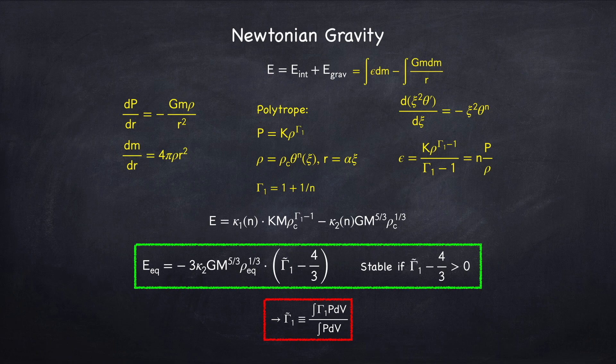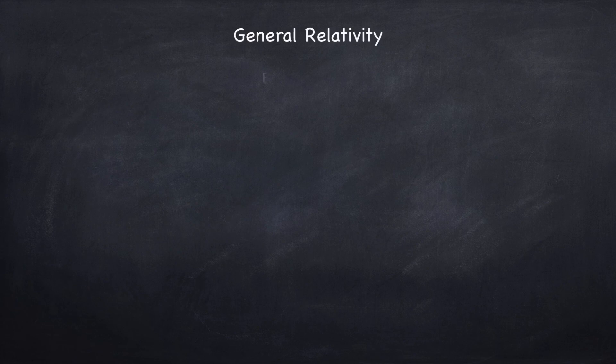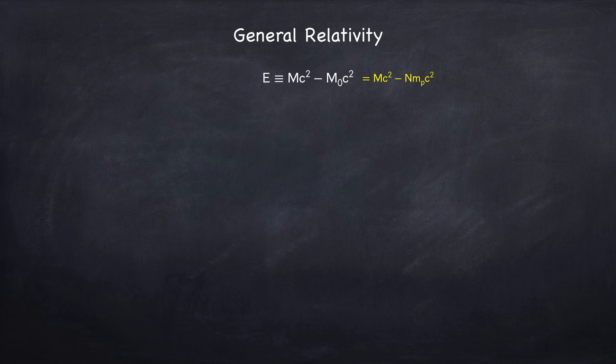Since Newtonian gravity is not actually correct, we went on to find the binding energy in general relativity. In this case, we defined the binding energy as the difference between the gravitational mass and the rest mass.